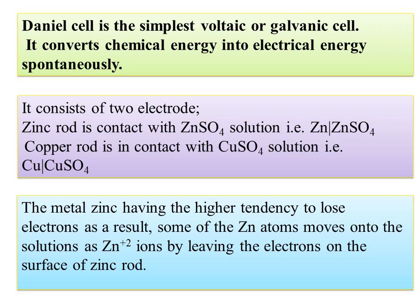The Daniel cell is the simplest voltaic or galvanic cell. It converts chemical energy into electrical energy spontaneously without connecting to an external electrical source. It consists of two electrodes: a zinc rod in contact with zinc sulfate (Zn | ZnSO₄) and a copper rod in contact with copper sulfate (Cu | CuSO₄).